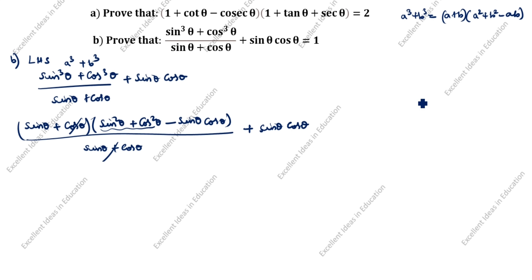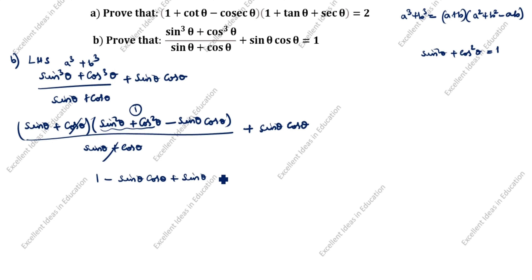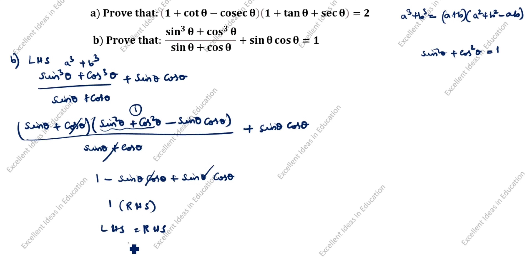What is this one? sin²θ + cos²θ − sin θ cos θ + sin θ cos θ. You see here minus sin θ cos θ and plus sin θ cos θ cancel. What is remaining? 1. You see in this question LHS equals RHS. RHS becomes 1. This is RHS. LHS equal to RHS. Hence proved.